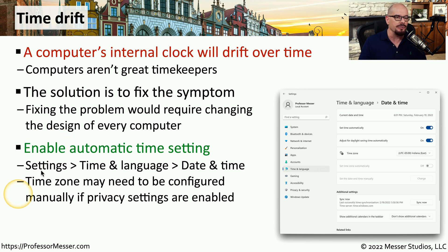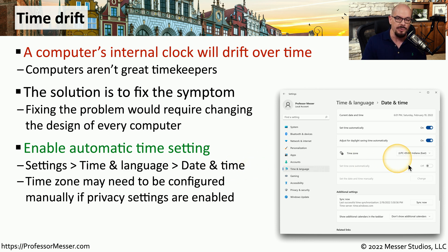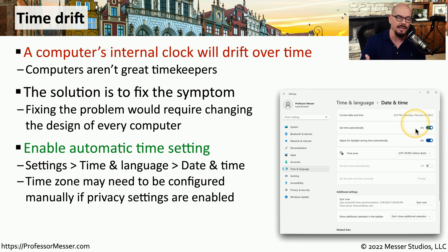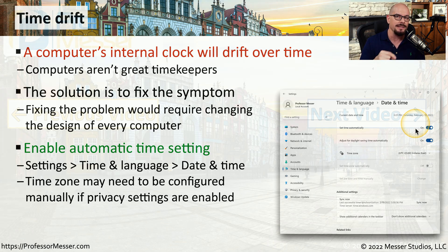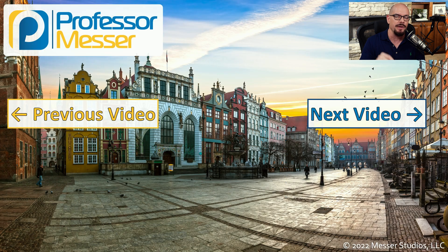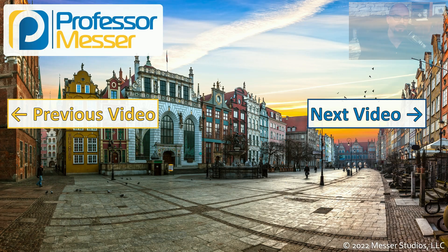You can find that under Settings, Time and Language, and Date and Time. You may need to configure the time zone, but once you do that, you can tell Windows to set the time automatically, and it will update itself constantly to ensure that the proper date and time is configured in your computer.